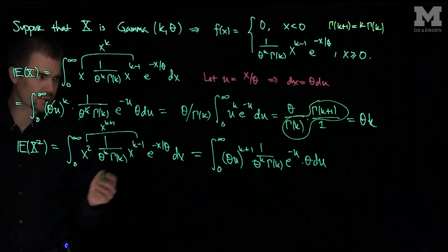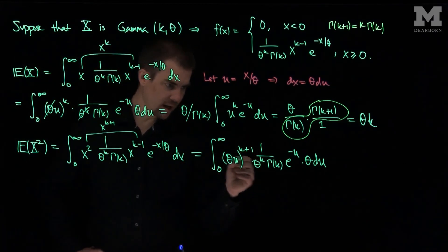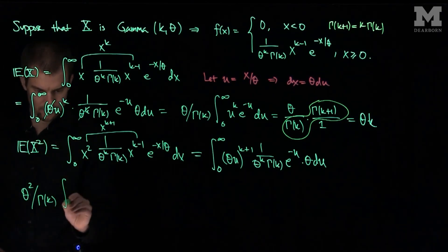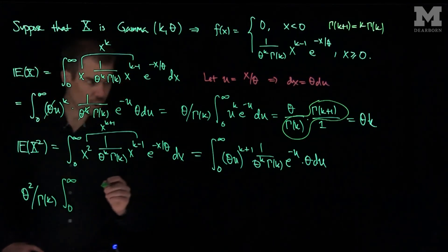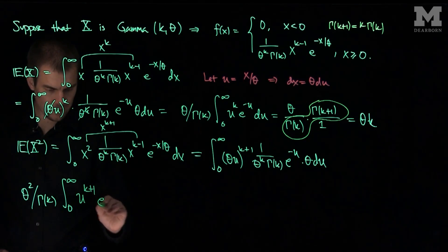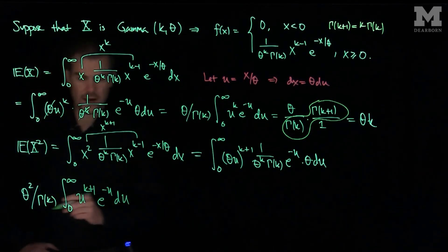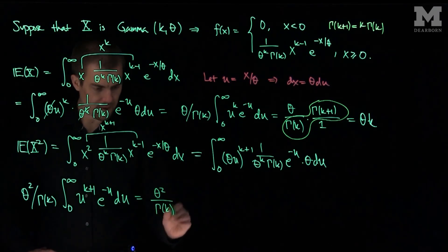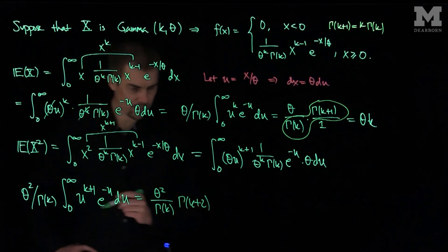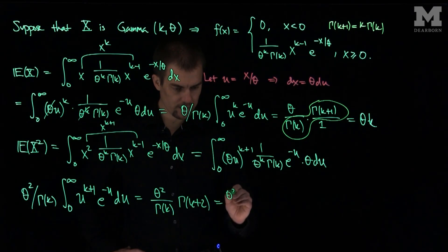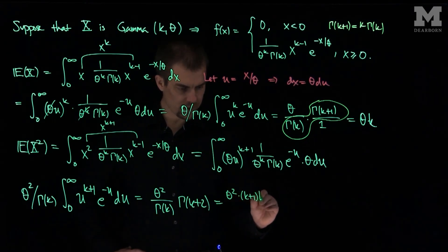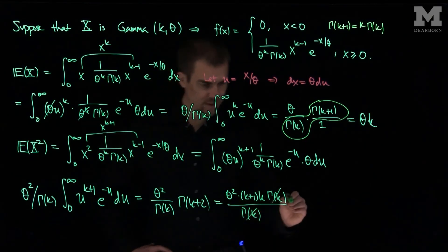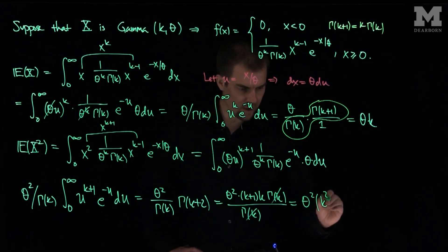The theta to the k cancels, leaving two thetas, so this becomes theta squared over gamma(k), times the integral from zero to infinity of u to the k+1, e to the negative u du. That integral is gamma(k+2), so we have theta squared over gamma(k) times gamma(k+2), which equals theta squared times (k+1) times k times gamma(k) divided by gamma(k). The gamma(k) cancels, giving the second moment as theta squared times (k squared + k).